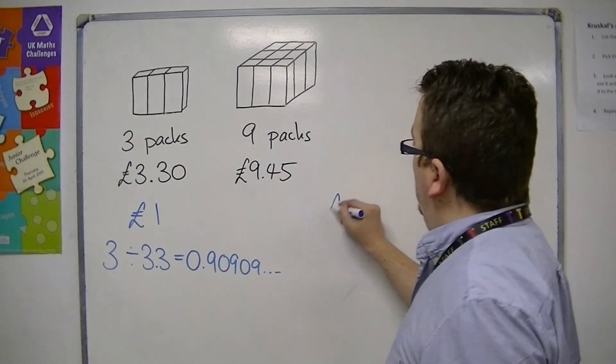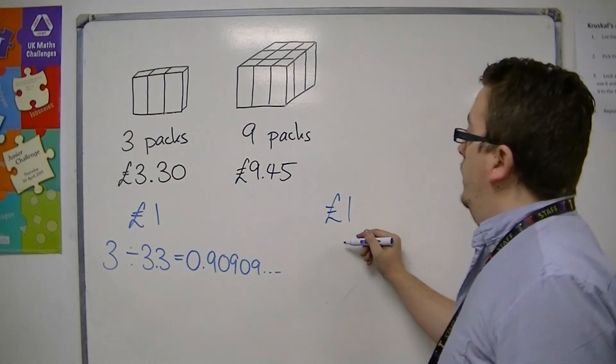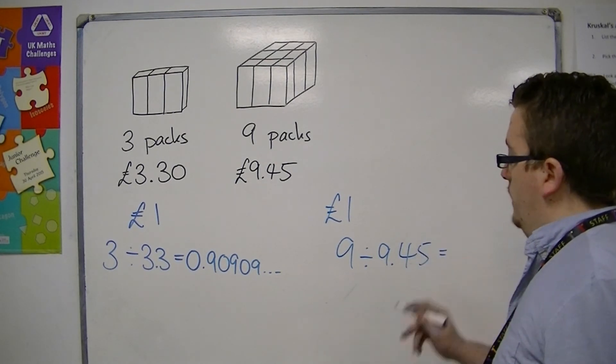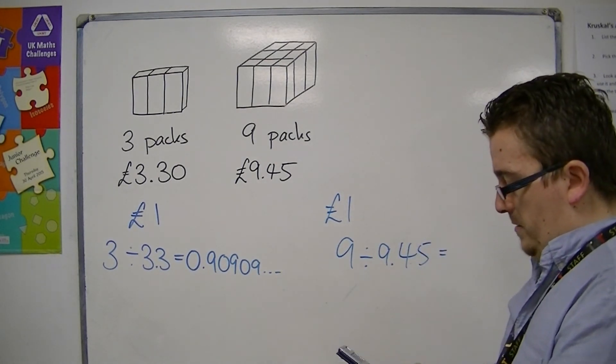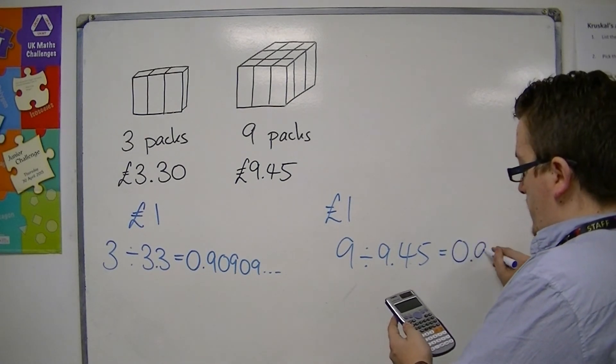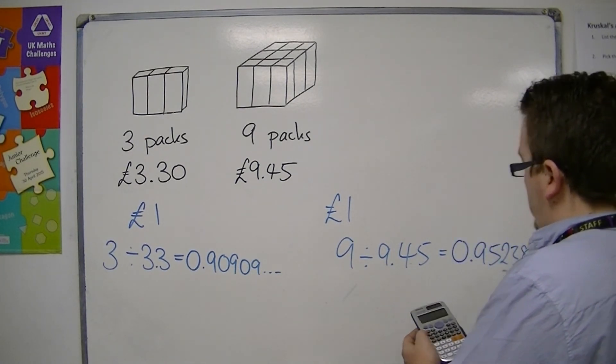Over here, one pound will get me 9 divided by 9.45. So I do 9 divided by 9.45, and I get 0.95238.